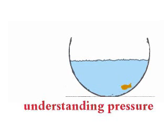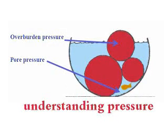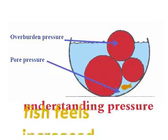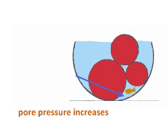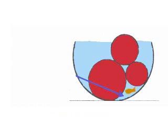You have a bowl of water with a fish, and you place three balls of various sizes into the water — note how the depth of the water increases. Because you put three balls in, one will not fit in the water but will stick out. The ball that sticks out is still stacked on the other two, so it is said to exert overburden pressure. The space between the two balls under water is called pore pressure. Your fish is now in deeper water and will feel that pressure. So overburden pressure increases when you stack more balls, and pore pressure increases when the water column rises.